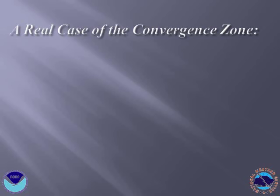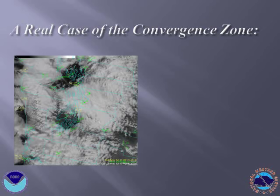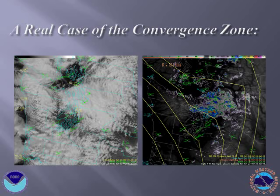Now we have pictures of satellite, radar, and model output from the National Weather Service for a Convergence Zone event on the afternoon of July 28, 2001. The first image is a visible satellite image along with local observation station reports. The next image is a radar image along with mean sea level pressure. Notice the clear areas to the north and south of this Convergence Zone event. The radar shows the highest reflectivities in the convergence area.